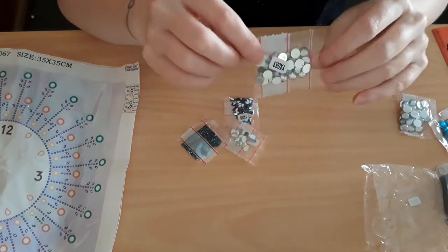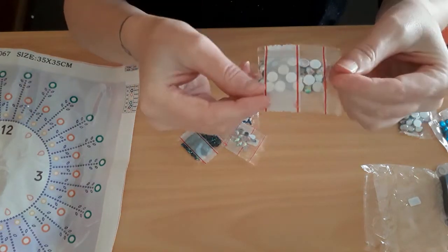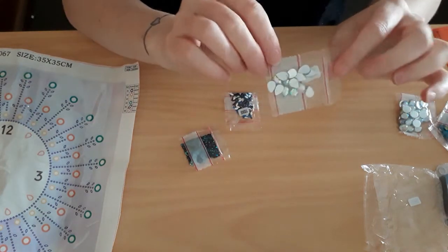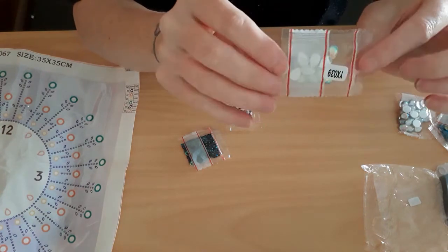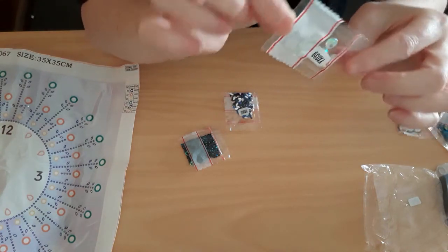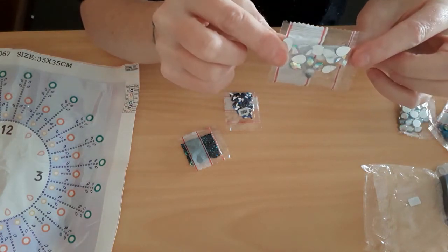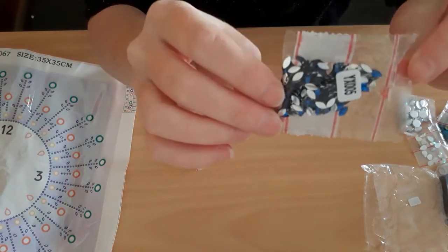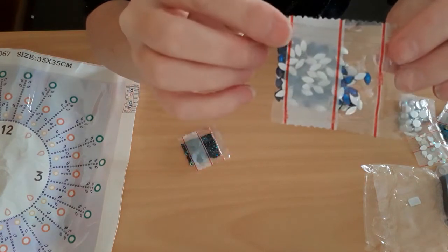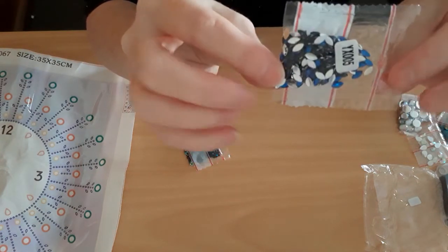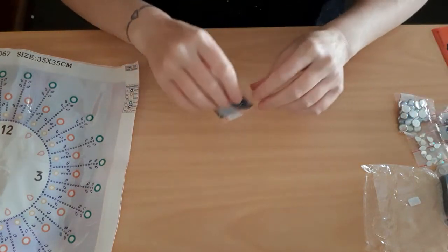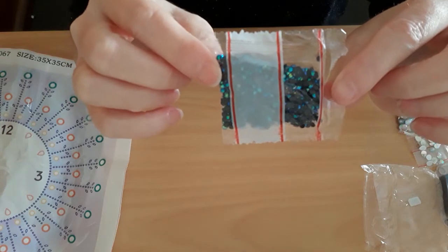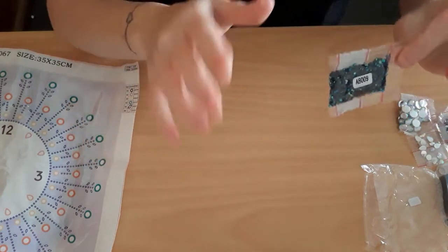You've got some smaller rounds in the AB, pretty sparkly. I've got some AB teardrops. Got some small dark blue marquees. Love that color. And then you've got these little black with the AB shine on them. They're very nice. I love the colors. Simple but effective.